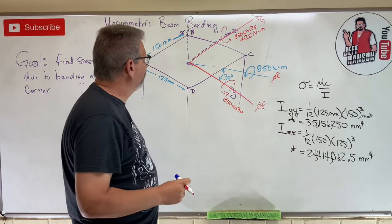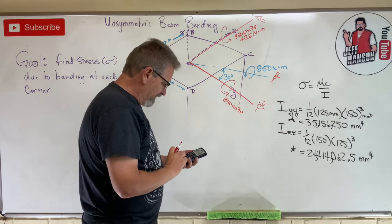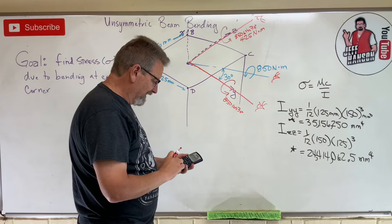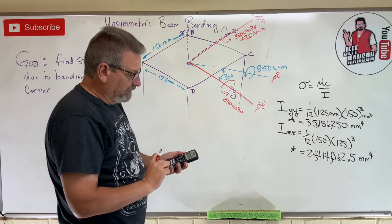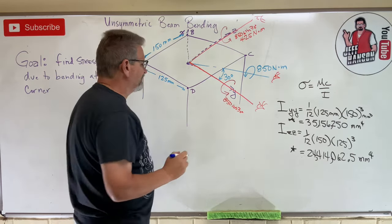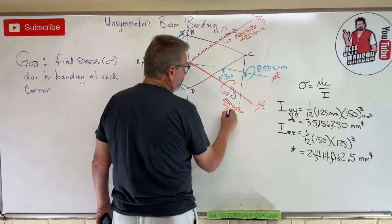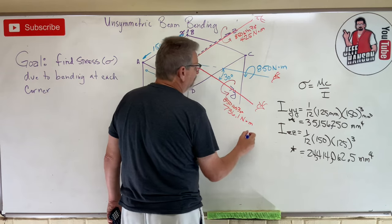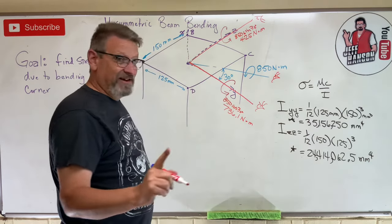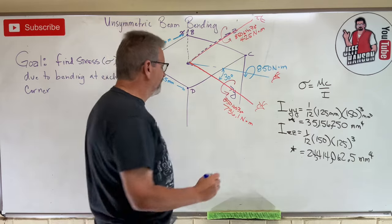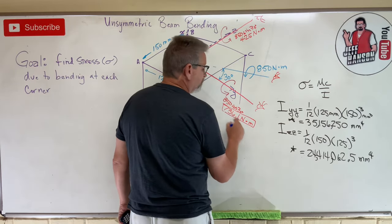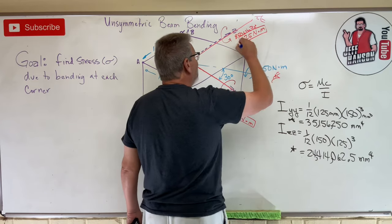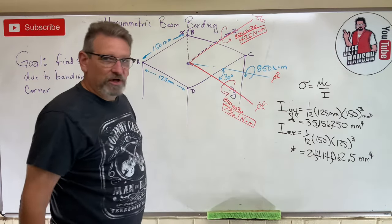That's a moment around the Z-axis — 425 Newton-meters — and the Y-axis moment is 736.1 Newton-meters. Remember, this is in Newton-meters and all that cross-section stuff is in millimeters, so at some point we're going to have to do a unit conversion.